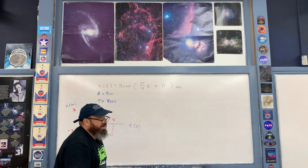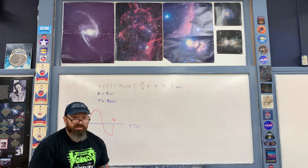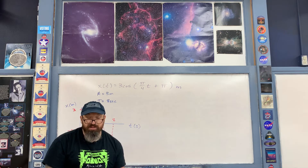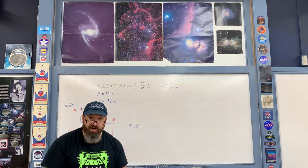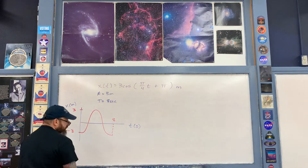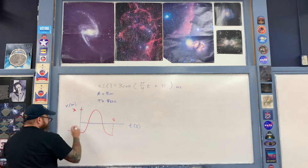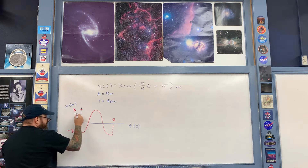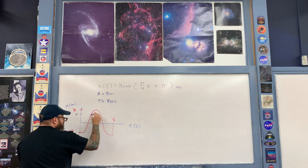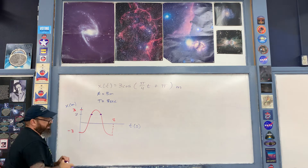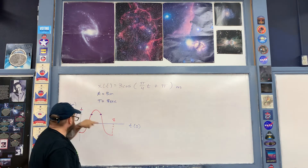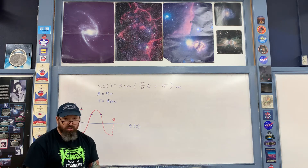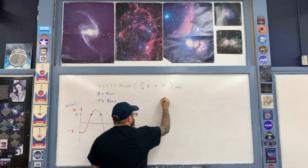Now for the next portion of the problem: when is the oscillator at a position x of positive 2 meters? We'll find the velocities and accelerations at those times and then mark their points on their respective graphs. Let's take a look at our position graph — right here is a position of positive 2 meters, so we have to find these two moments in time. I'm going to take my function, set position x equal to 2, and then solve for t.